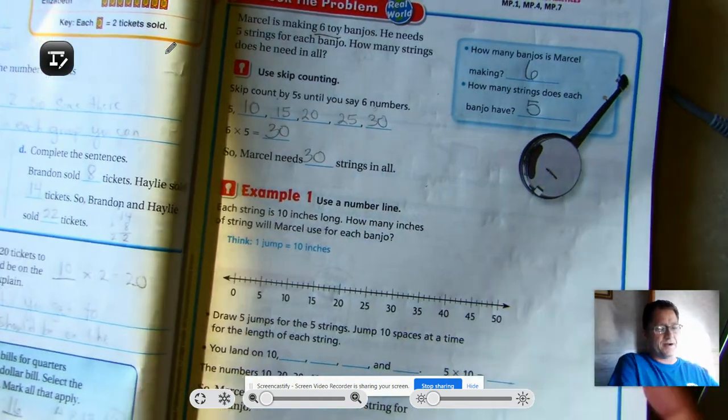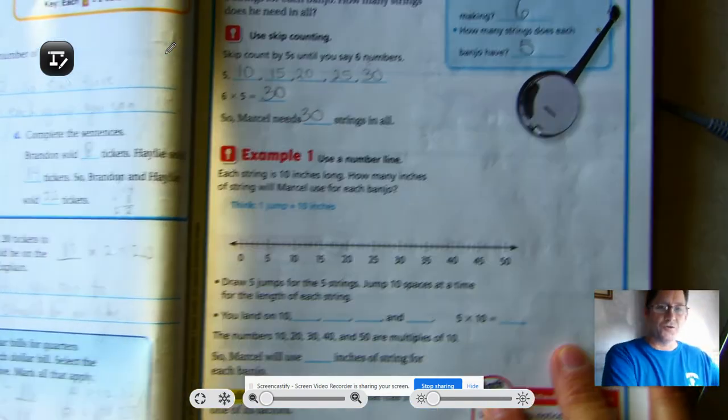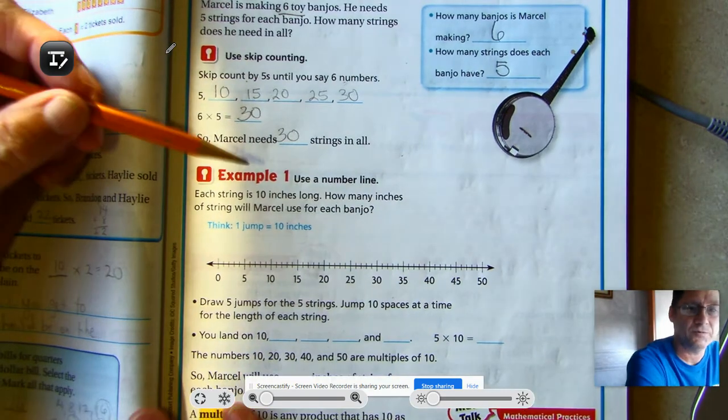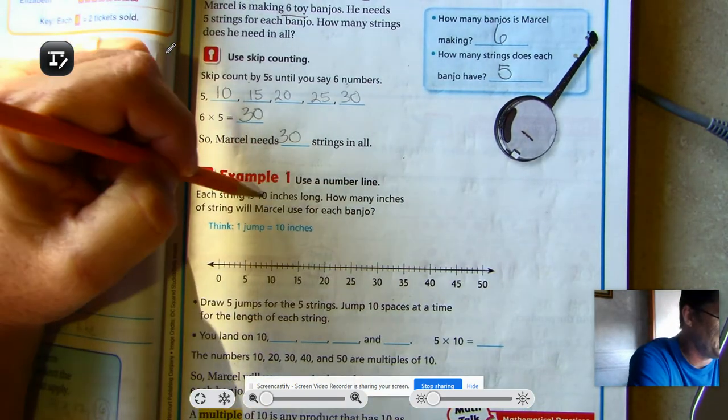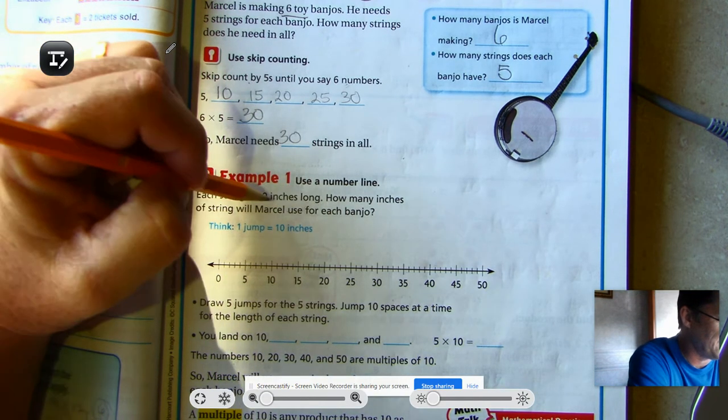So he needs 30 strings in all. That's one way. Skip counting by fives. We can also use a number line. And so in this example, it says each string is 10 inches long. How many inches of string will Marcel use for each banjo?